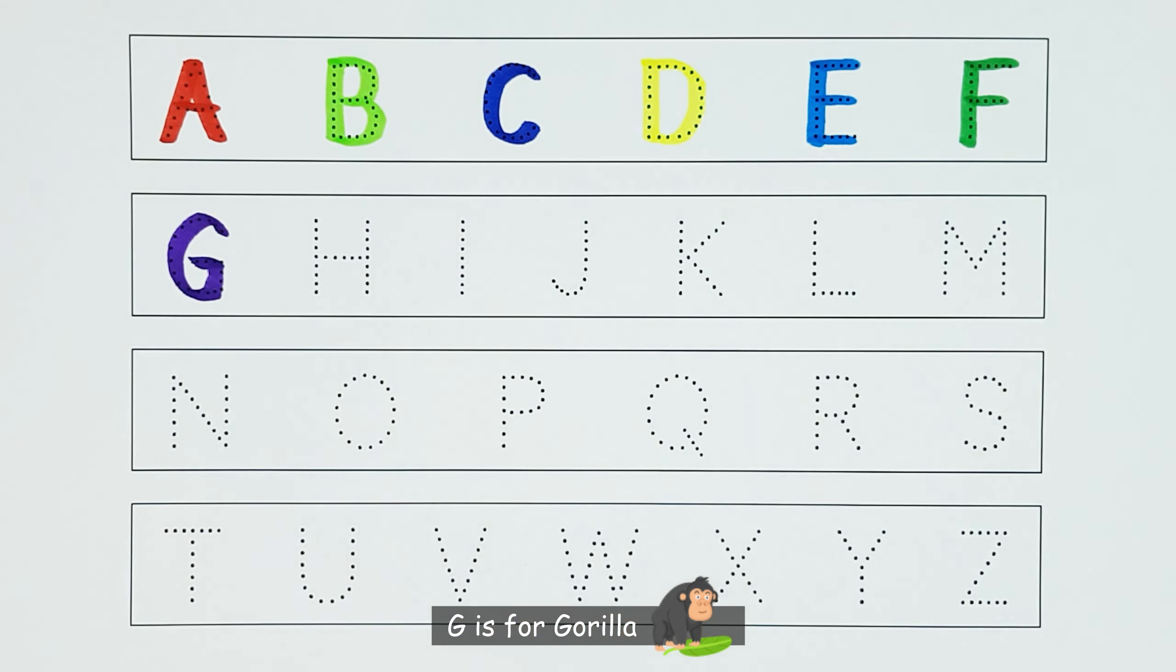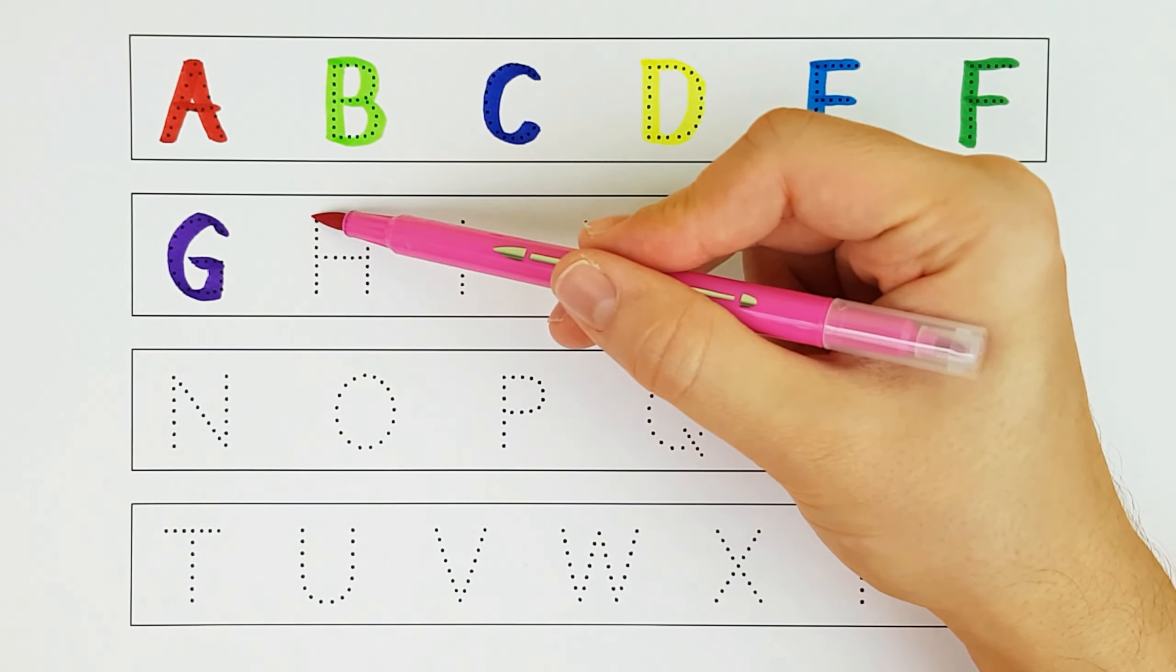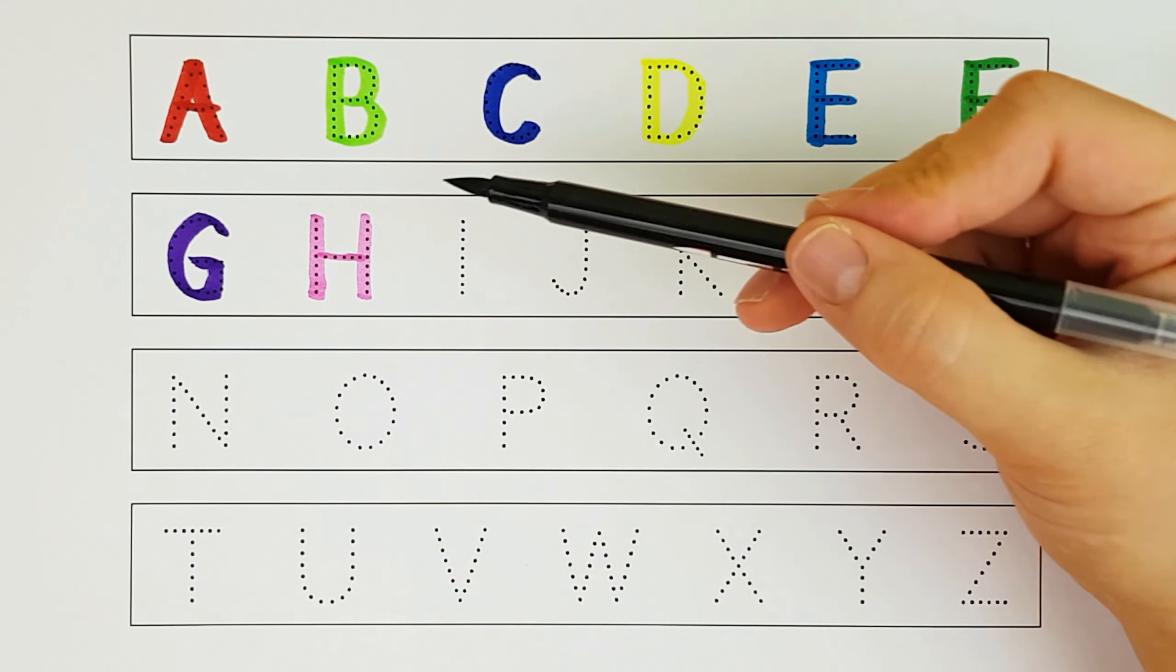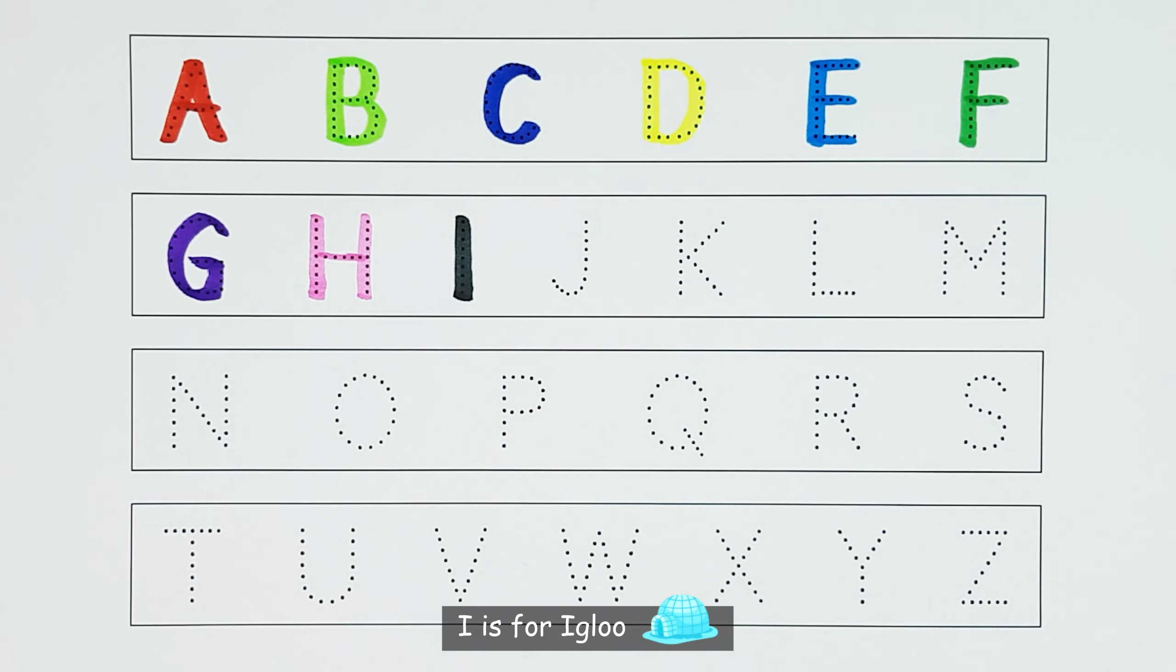G. G is for gorilla. G. H. H is for hen. H. I. I is for igloo.